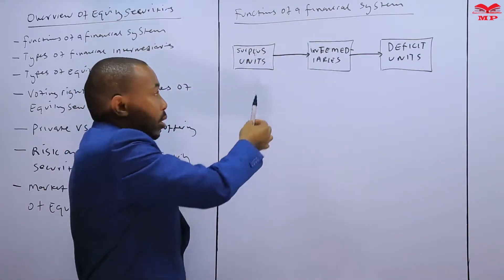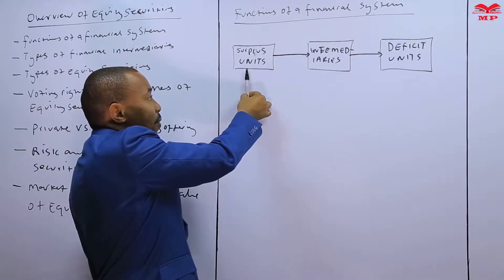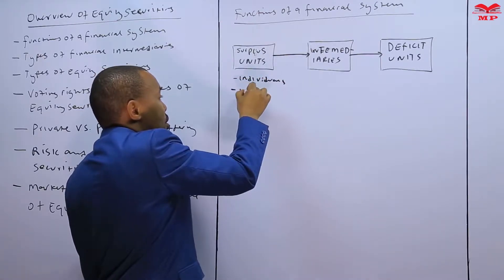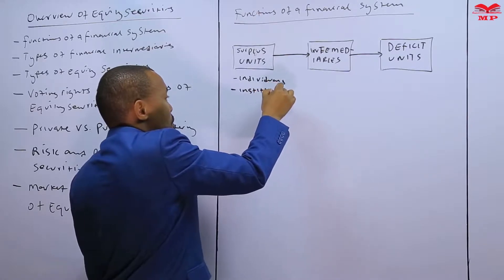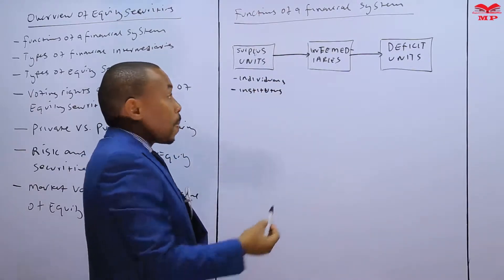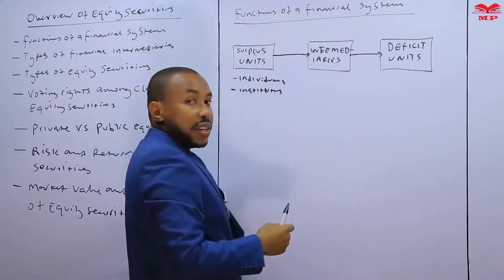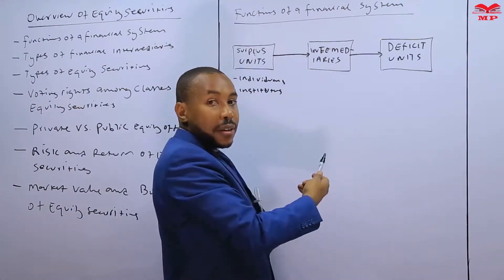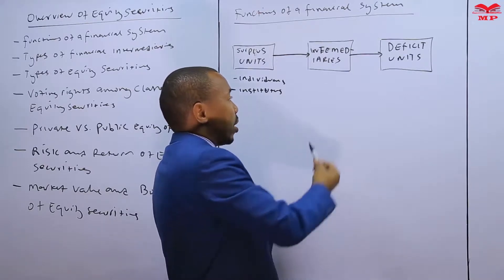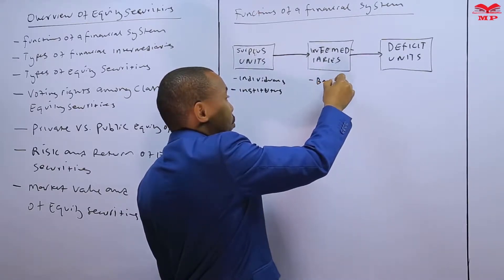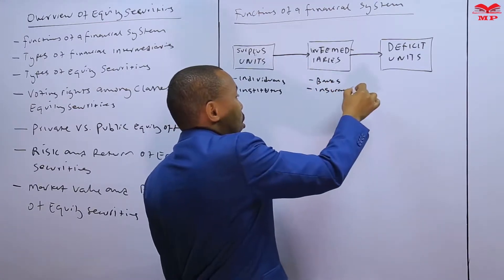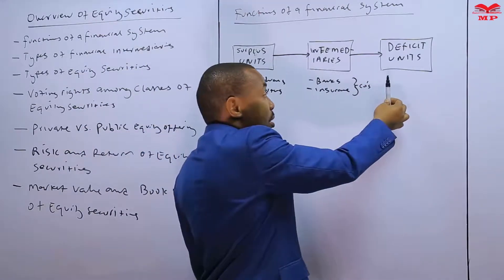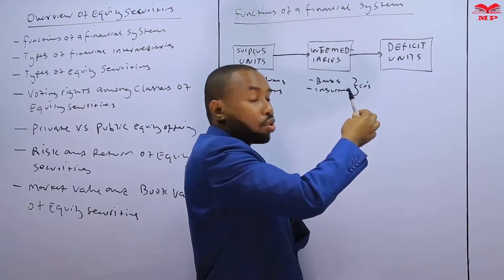The surplus units are individuals and institutions that have got excess funds. They pump those excess funds into intermediaries. Examples of intermediaries include stock brokerage firms, commercial banks, and other depository institutions such as insurance companies. The deficit units are the individuals and institutions that are in need of the money.